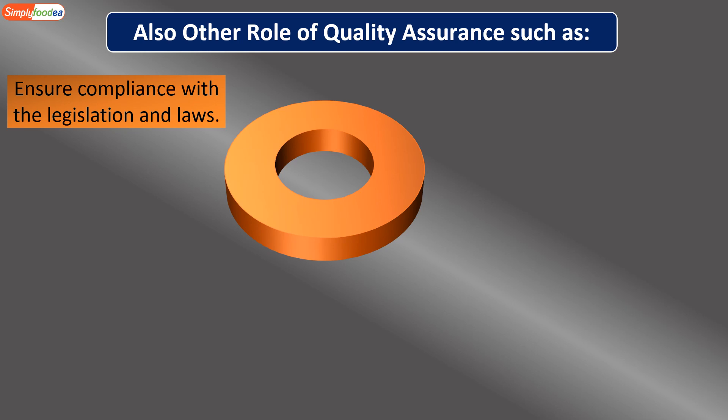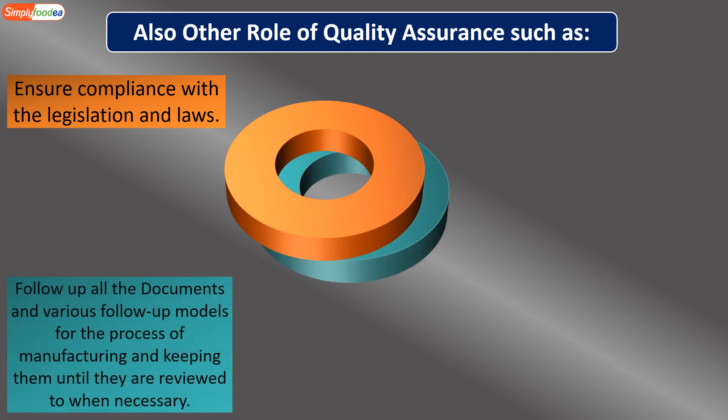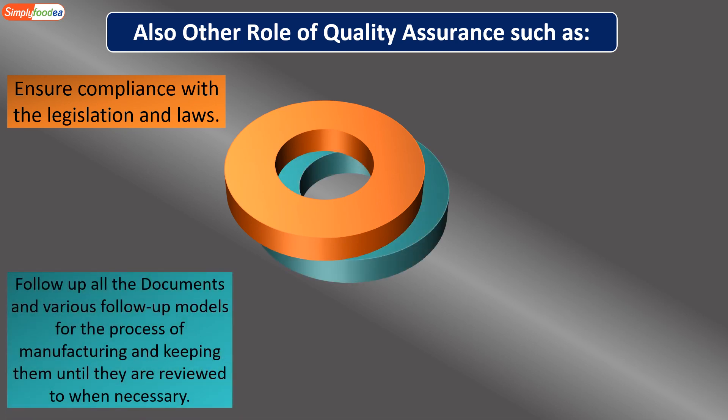Quality assurance is responsible for following up on documents and various process monitoring models during manufacturing, and keeping them until they are reviewed when necessary. If there is any recall or traceability investigation, keeping records and maintaining documentation is one of the main responsibilities of quality assurance.